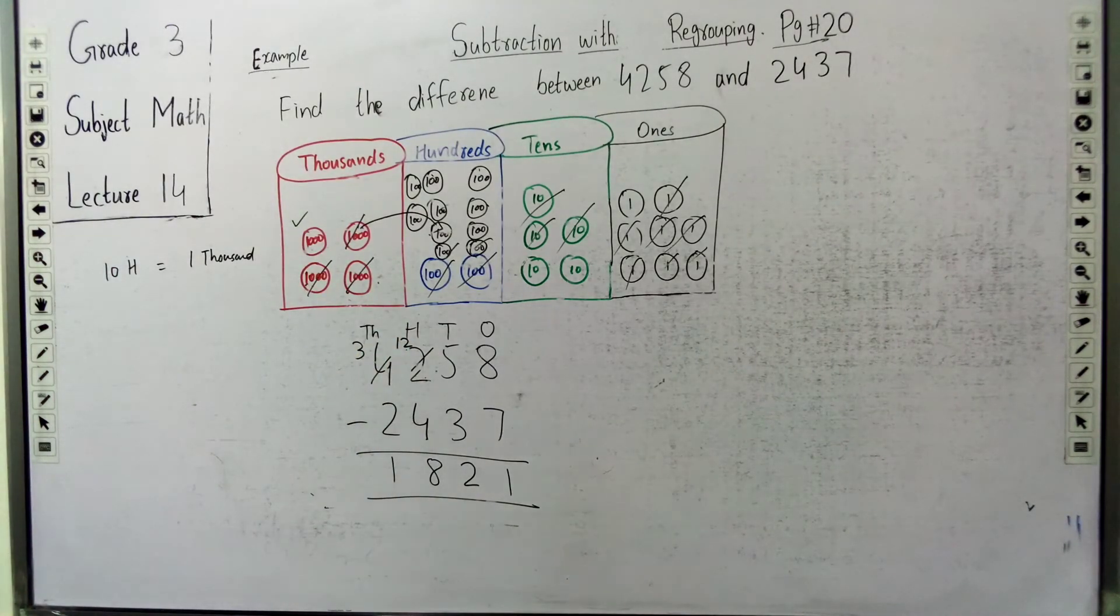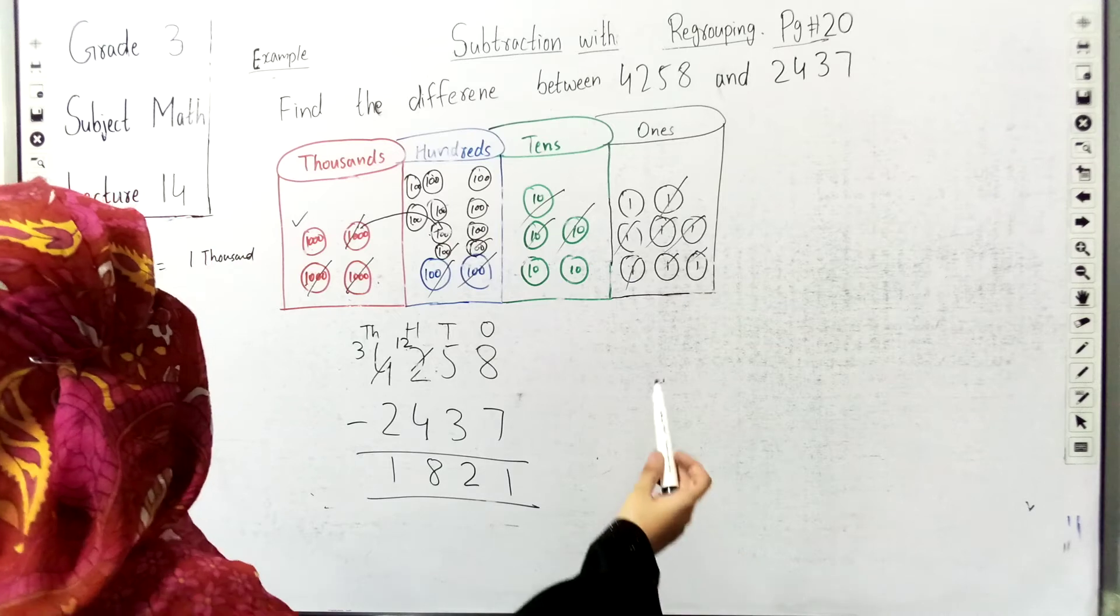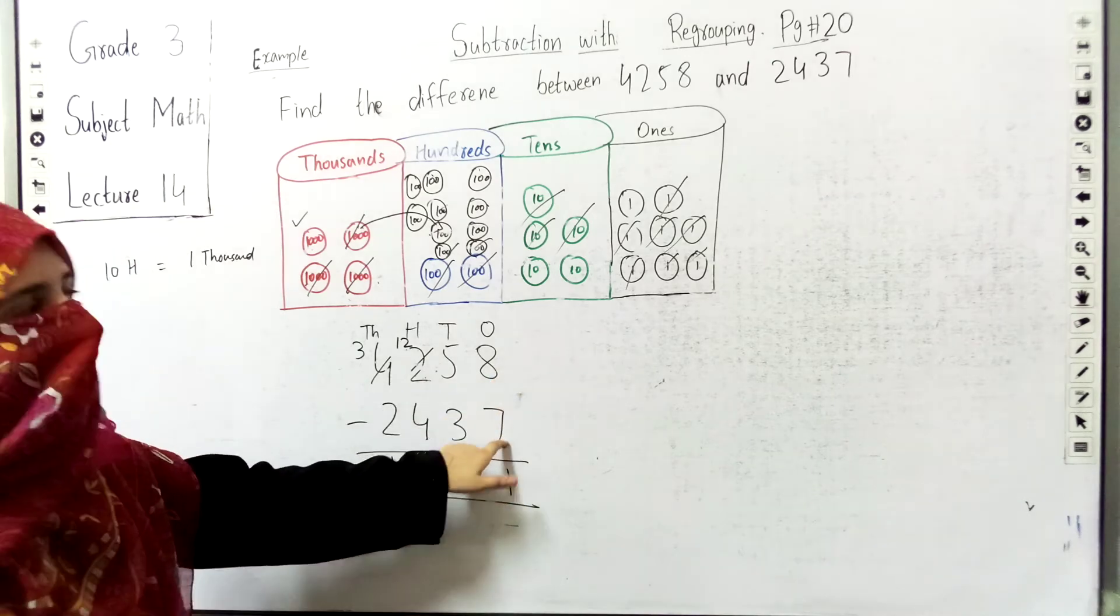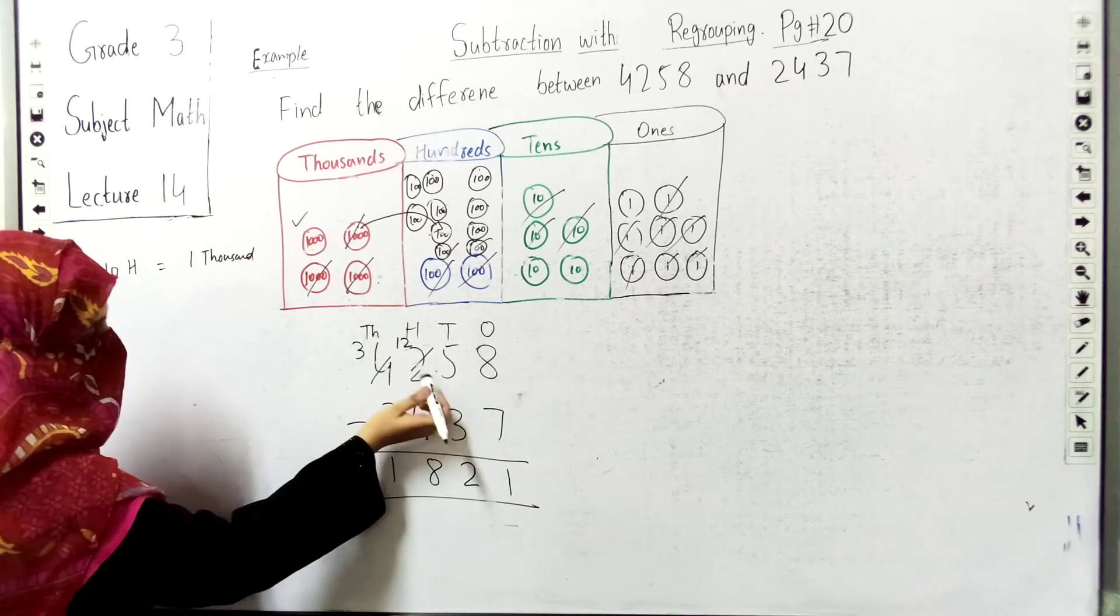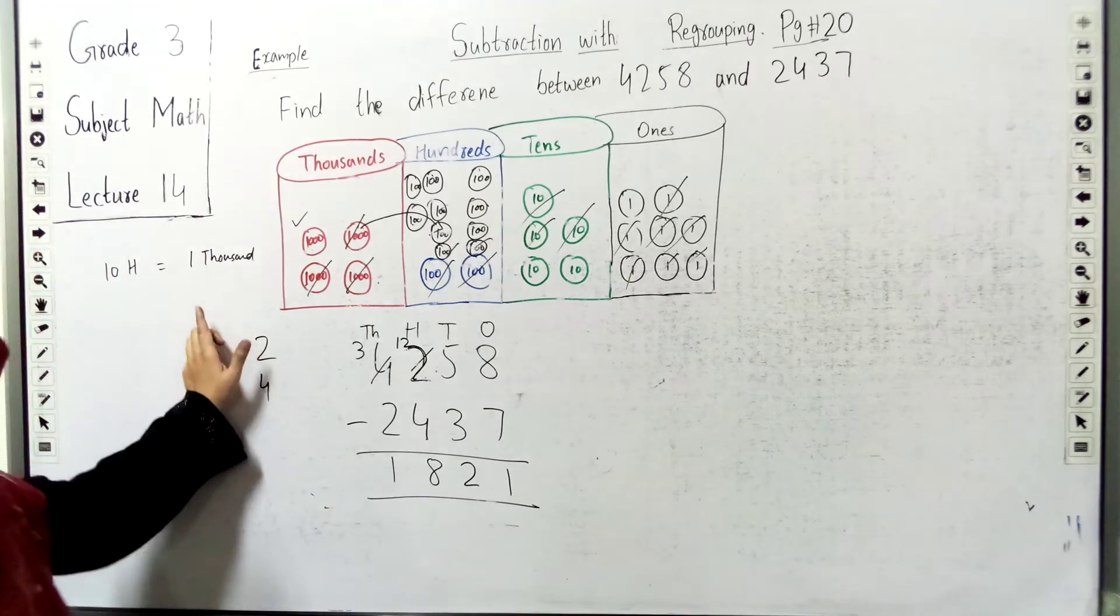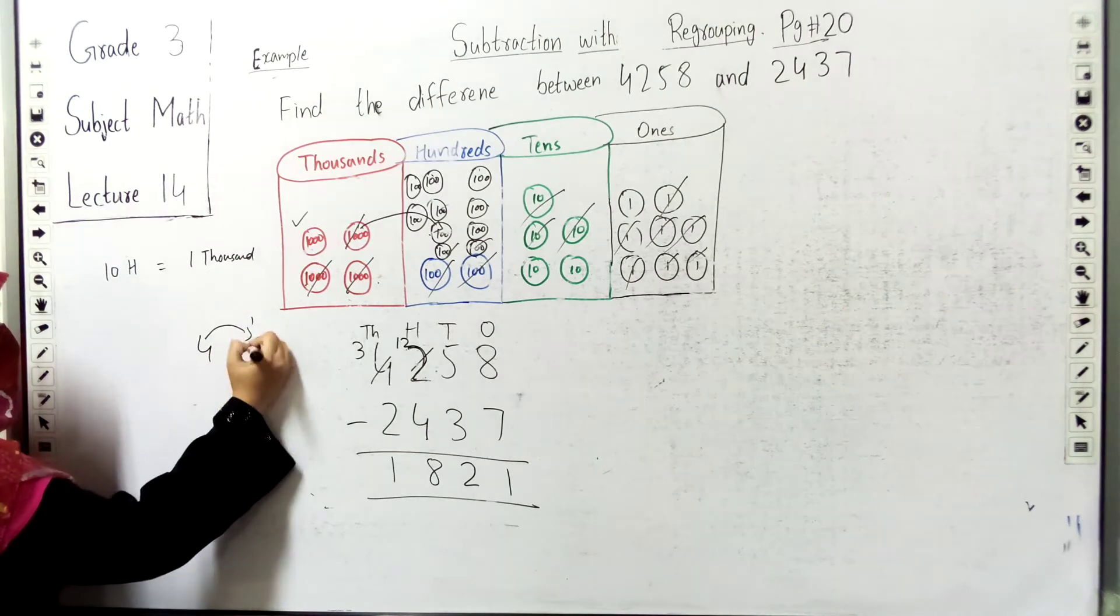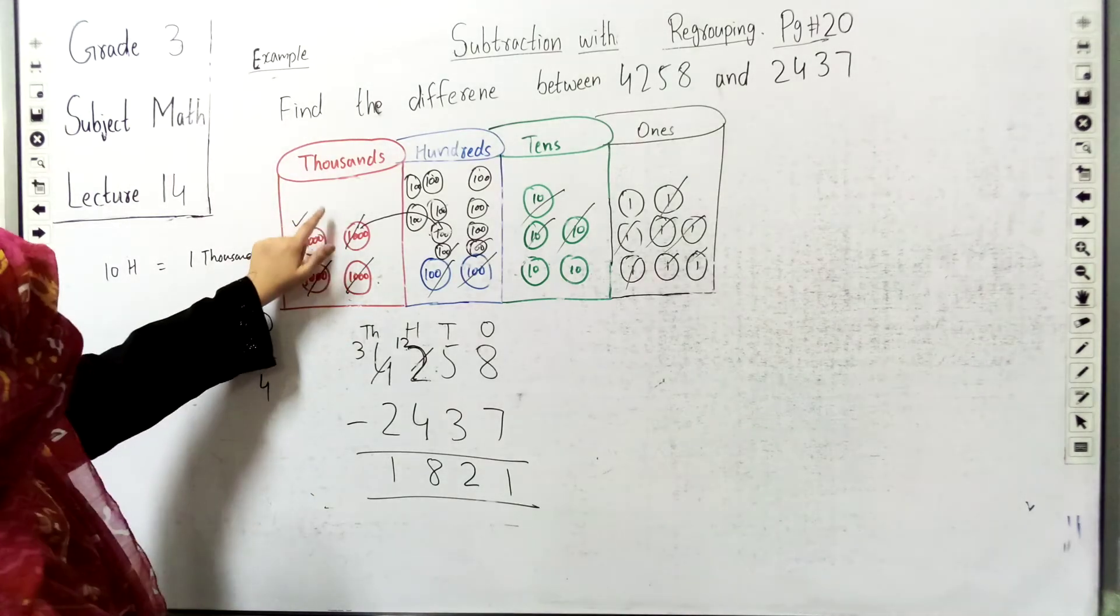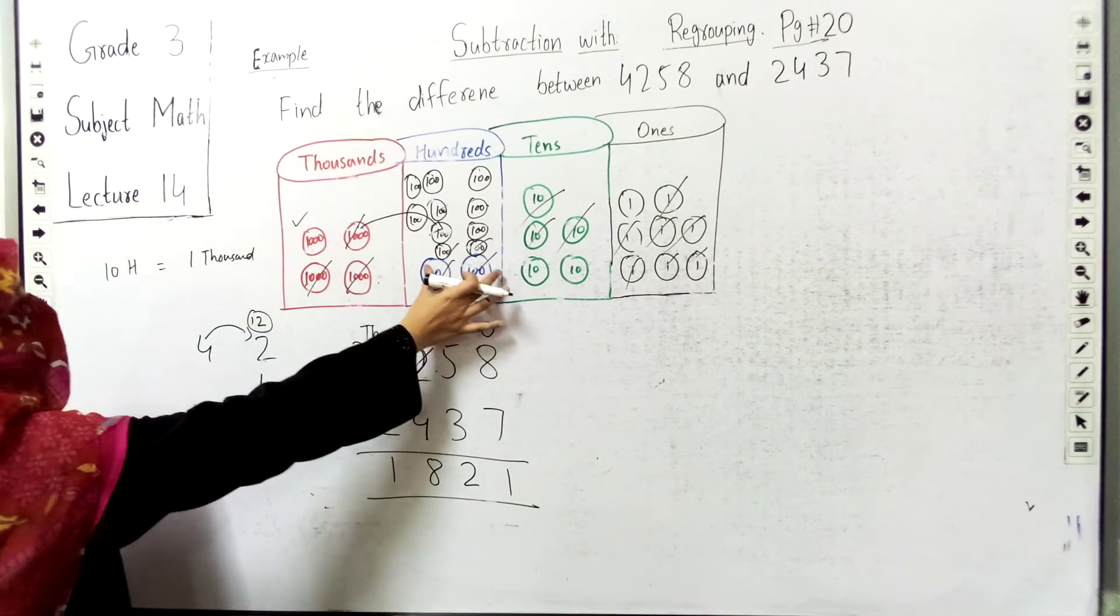So we have regrouped this question. The question was the difference between 4258 and 2437. We minused 8 minus 7 equals 1. Then we minused 5 minus 3 equals 2. We had 2 blocks of 100, but 2 was smaller and 4 was greater. We regrouped the 1000 blocks. We minused 1 from the thousands, which gave us 10 hundreds. One block of 1000 was transformed into ten hundred blocks.